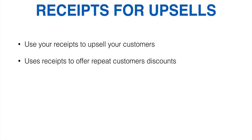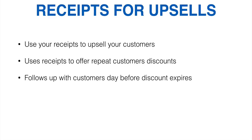Another thing that Conversio does is use receipts to offer repeat customers discounts. This app — literally a one-click install on your store — will recognize when a customer comes back and purchases multiple times. If you want, it can email them and say: 'Hey, you're a repeat customer, we appreciate you, and we're going to give you a special discount.' That's all automated when you set it up. It also follows up with customers the day before their discount expires.